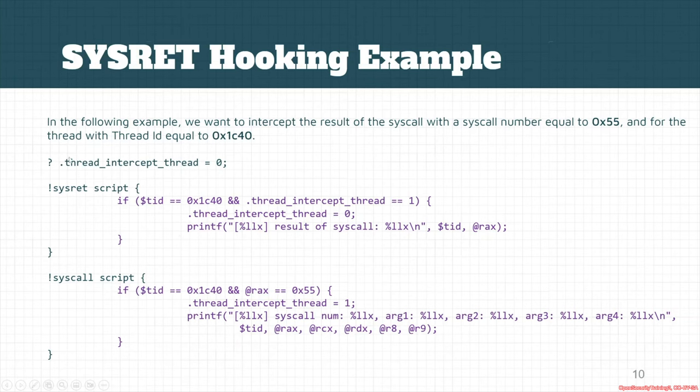In the sysret event, first we check whether we're in the same thread. If we are, we check whether the thread already executed the syscall instruction. If it did, we unset this global variable to make it available for the next run, and we print the result of the syscall. Here we can manipulate the result of the system call by simply changing the RAX register or similar things.